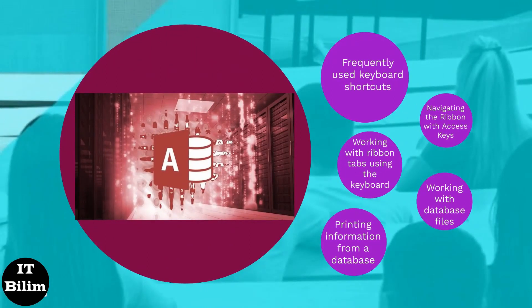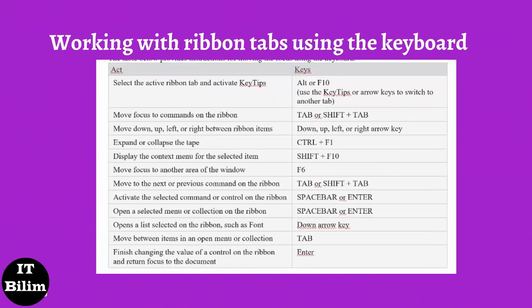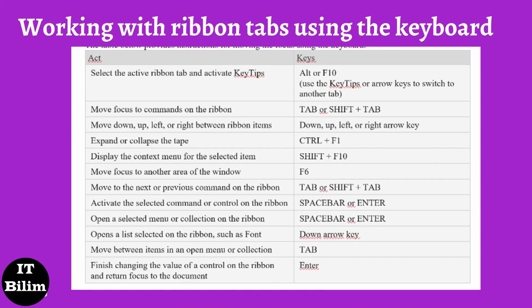Working with ribbon tabs using the keyboard. Press Alt to go to the list of ribbon tabs. To go directly to a tab, press the keys from the key tip. Press the down arrow key to move to the selected group. Use Ctrl+Right Arrow and Ctrl+Left Arrow to navigate from one group of commands to another. Press Tab or Shift+Tab to navigate between commands in a group. You can navigate commands forward and backward in order. Controls can be activated in different ways depending on their type.